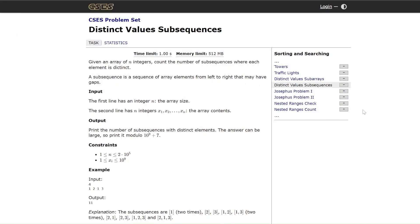Hi guys, our problem is distinct value subsequences from CACS problem set. The problem is: given an array of n integers, count the number of subsequences where each element is distinct. A subsequence is defined as you go from left to right and pick some element and skip some element.